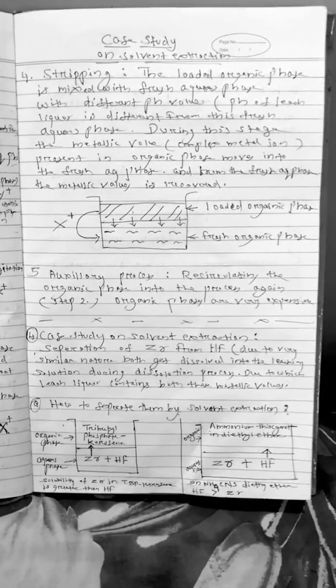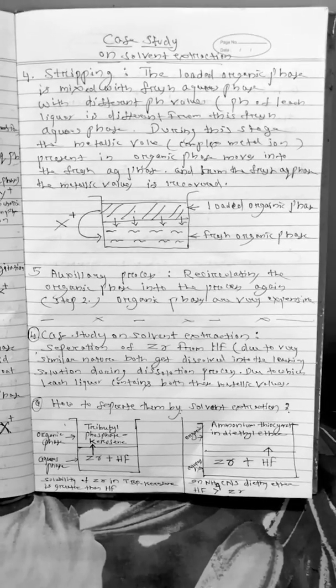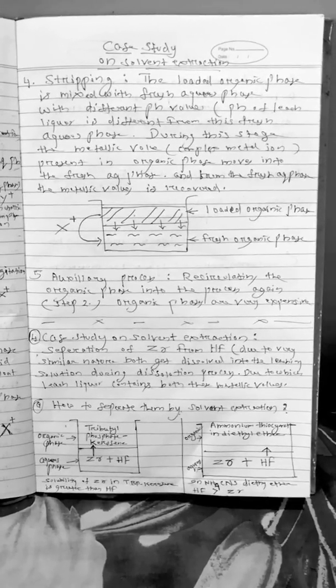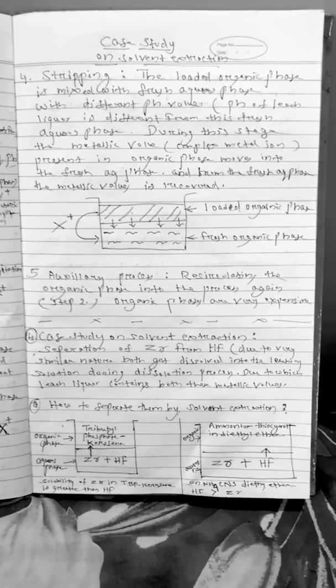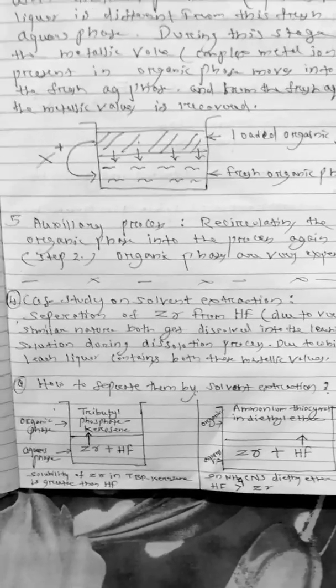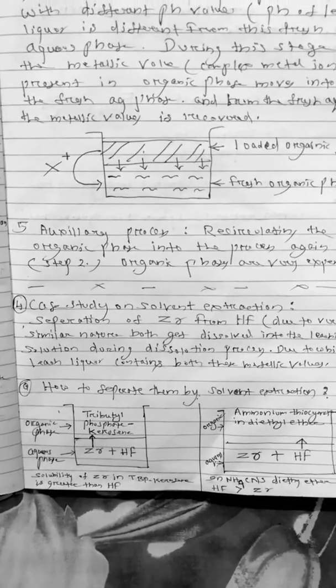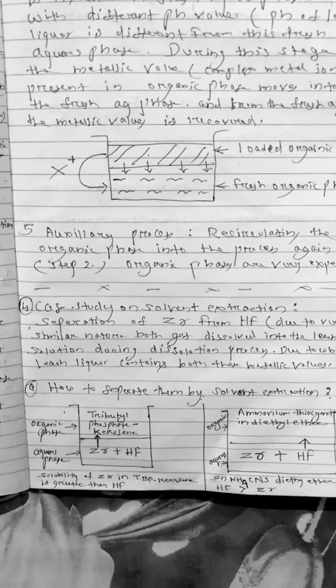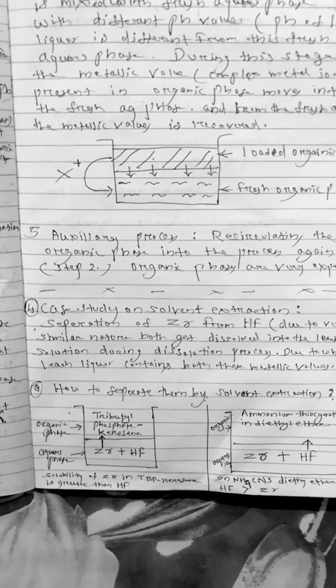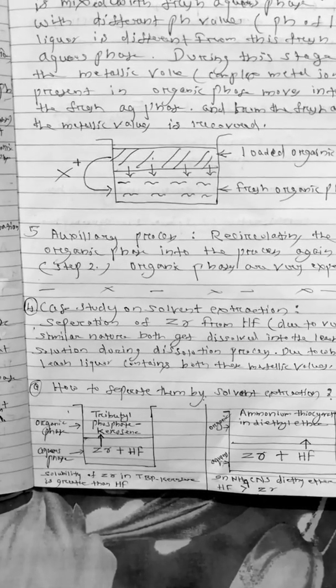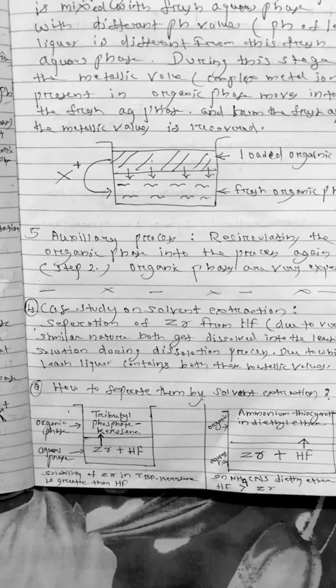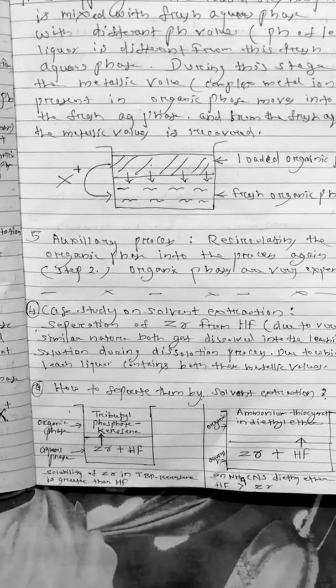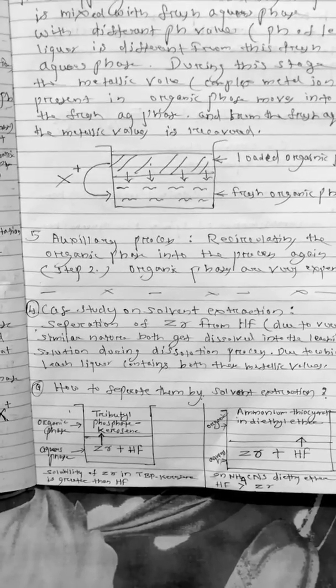Then we will discuss a case study where we can separate zirconium from hafnium if both are present in the aqueous solution or that is present in the leach liquor. So here to separate zirconium and hafnium, suppose we choose an organic phase that is tributyl phosphate kerosene and this tributyl phosphate kerosene is added to a leach liquor containing zirconium and hafnium and we do agitation or stirring. So what happens, the zirconium has high solubility into this organic phase so it will migrate into this organic phase leaving behind hafnium.